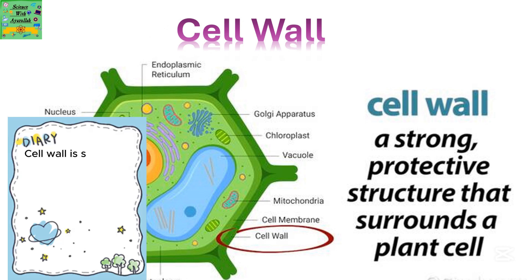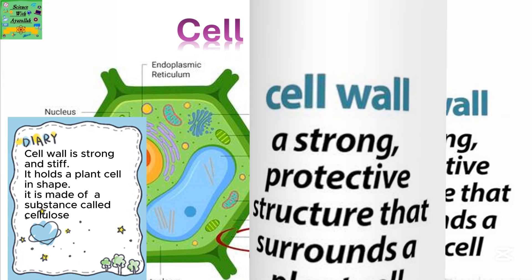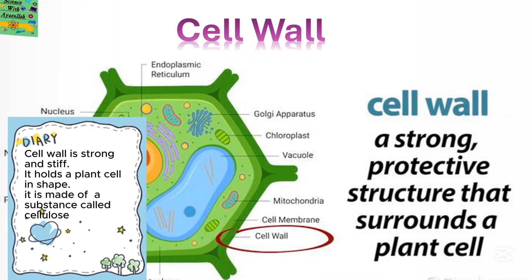The cell wall is strong and stiff. It holds a plant cell in shape. It is made of a substance called cellulose.